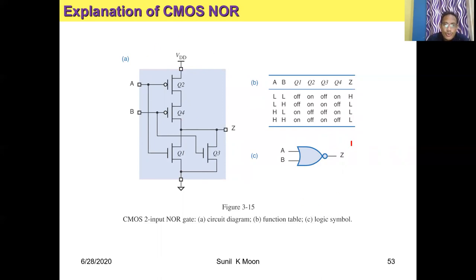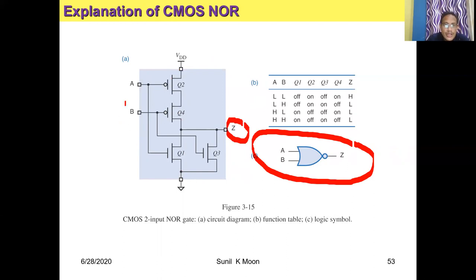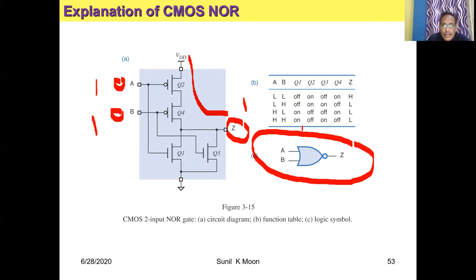For the two-input CMOS NOR gate with inputs A and B: when A=0 and B=0, Q1 becomes off, Q2 becomes on, Q3 becomes off, Q4 becomes on — VDD (5 volts) directly produces output equal to 1. When A=1 and B=1, Q1 becomes on, Q2 becomes off, Q3 becomes on, Q4 becomes off — no current flows, no output voltage is produced, so output is zero. This is the pure NOR gate operation.